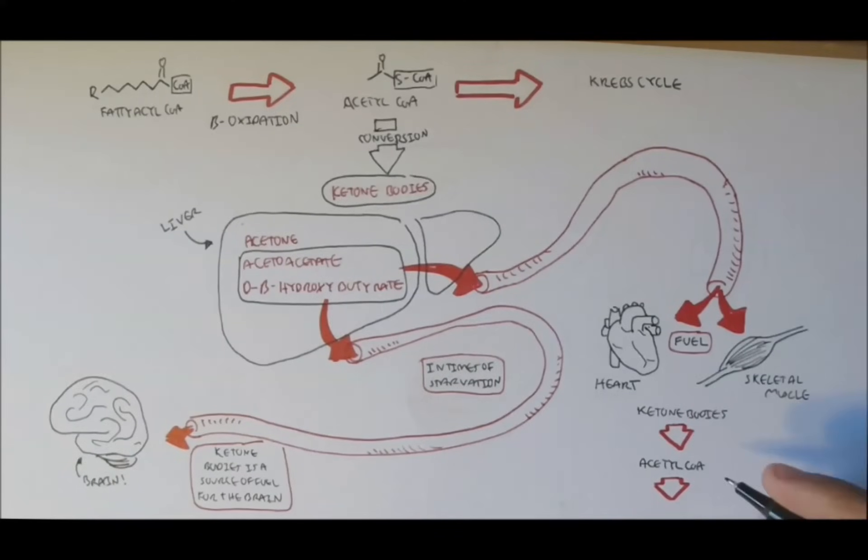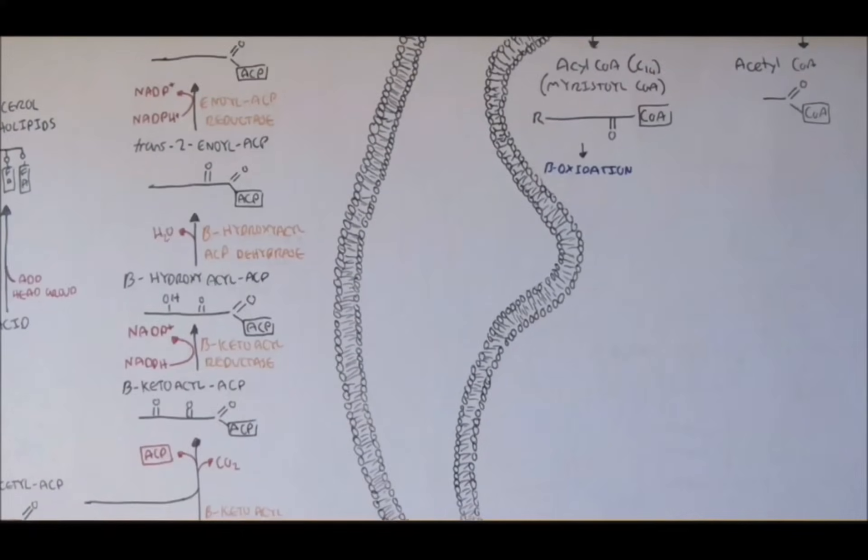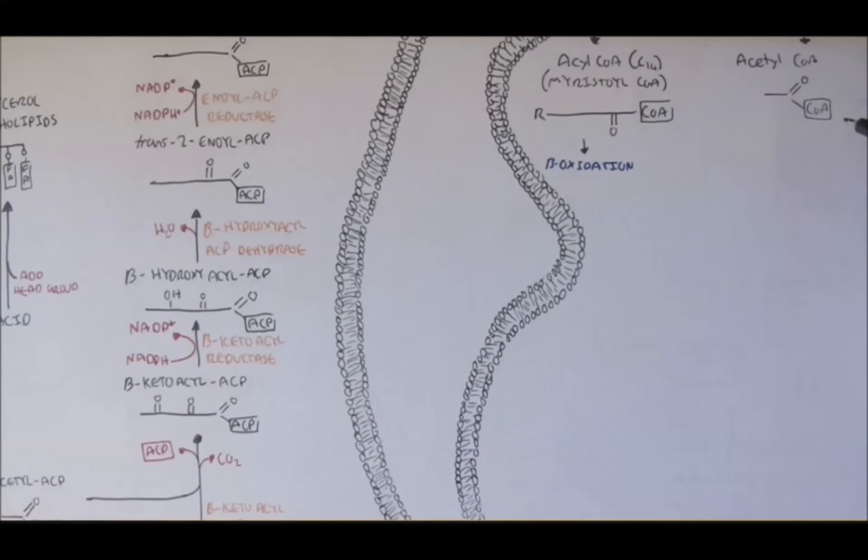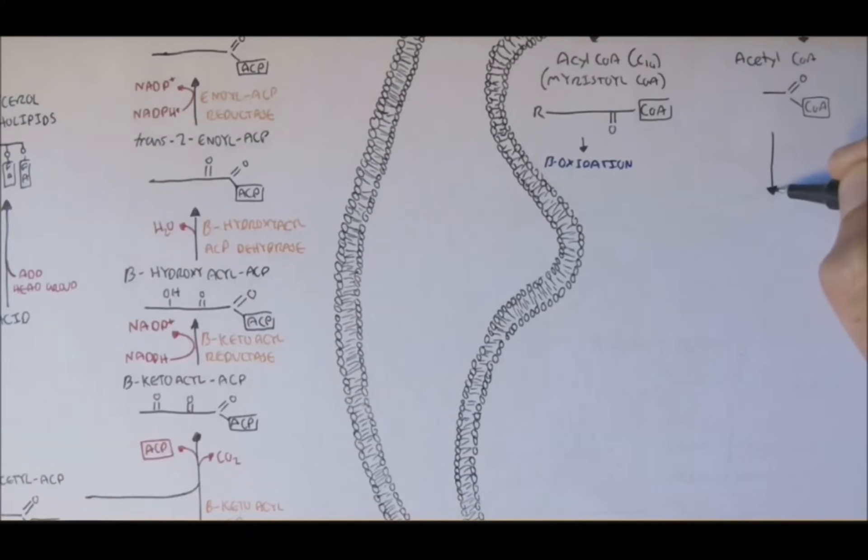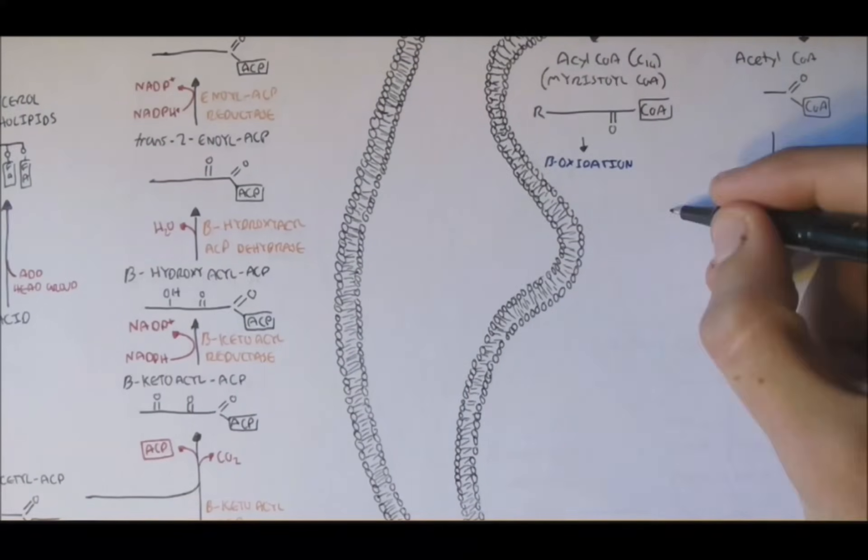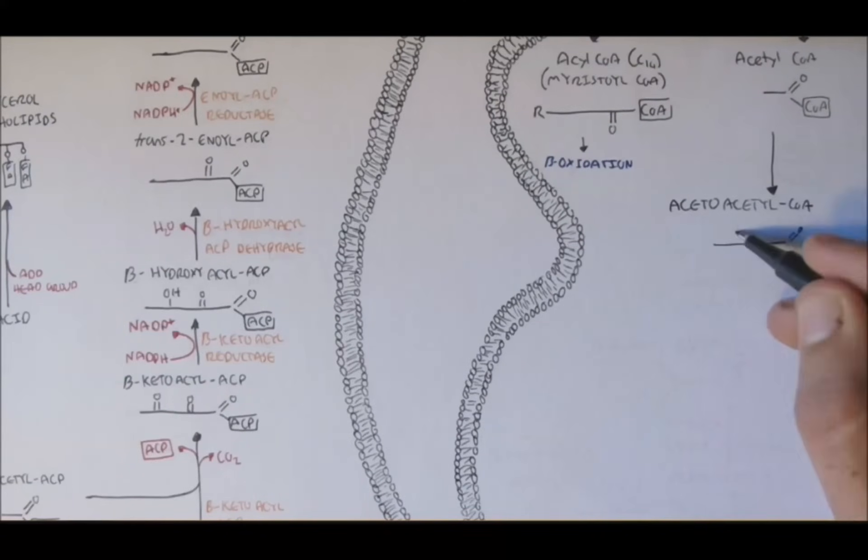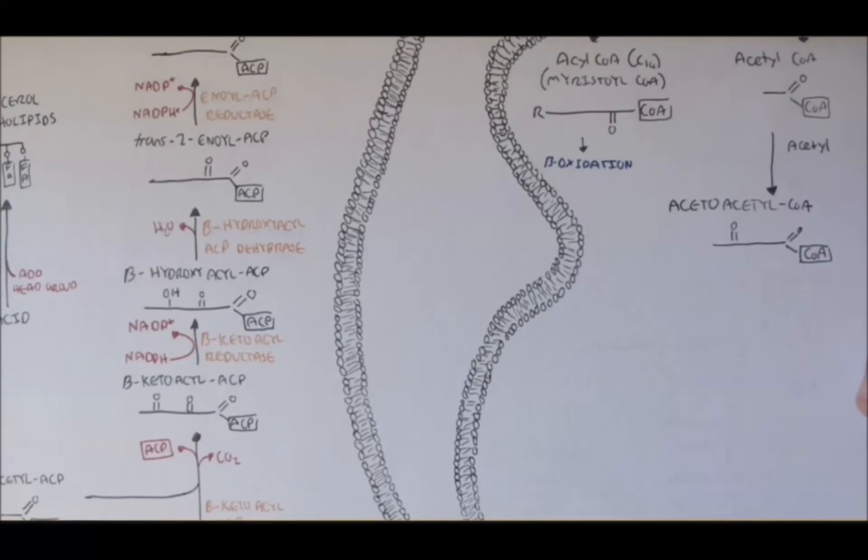So back to the map. Now, acetyl-CoA, here, with another acetyl-CoA, so two acetyl-CoAs, can form acetoacyl-CoA by the enzyme thiolase. And a CoA is released also.